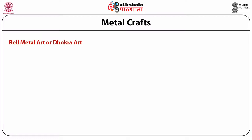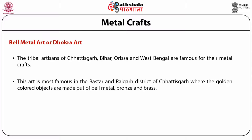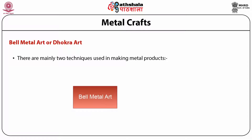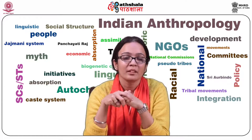The first type is metal crafts. The tribal artisans of Chhattisgarh, Bihar, Orissa and West Bengal are famous for their metal crafts. The metal products produced in these regions come under the bell metal art or dhokra art. This art is most famous in the Bastar and Raigarh district of Chhattisgarh, where golden colored objects are made out of bell metal, bronze and brass. The dhokra art derived its name from the dhokra damar tribe who used the lost wax technique for making these products. There are mainly two techniques used in making these metal products — the lost wax technique and the iron smithy technique.